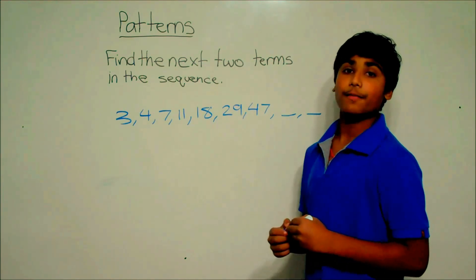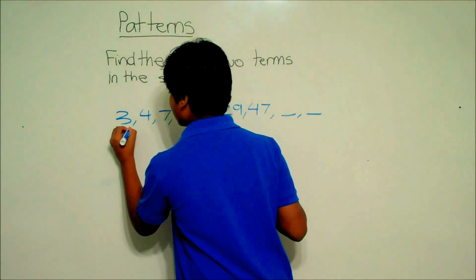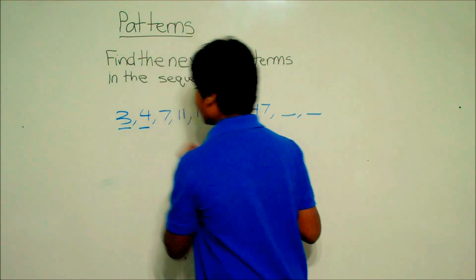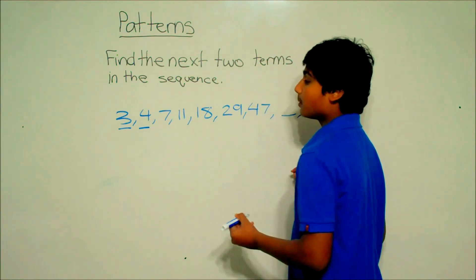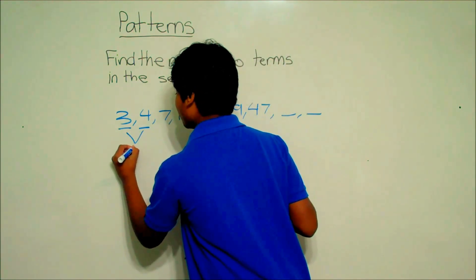Let's look at the first two terms of the sequence: 3 and 4. What is the difference between 3 and 4? It is 1, so we're going to put a 1 underneath.